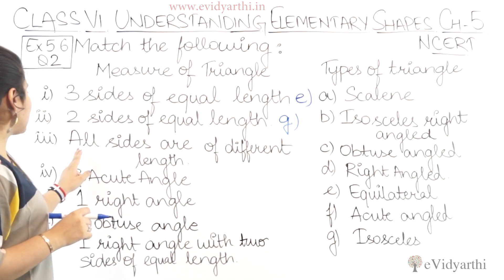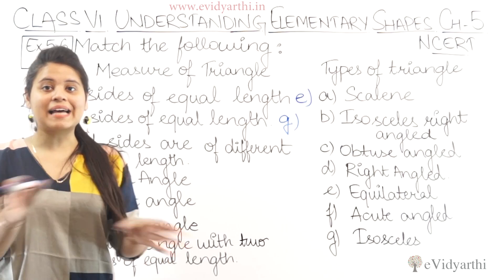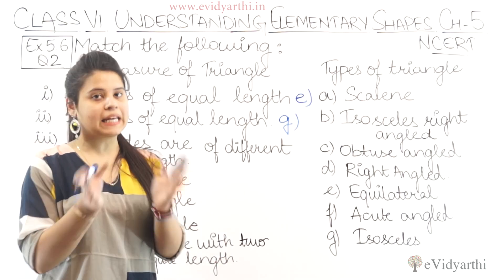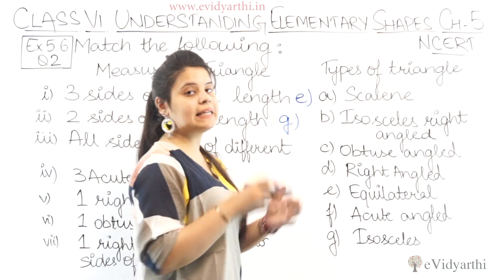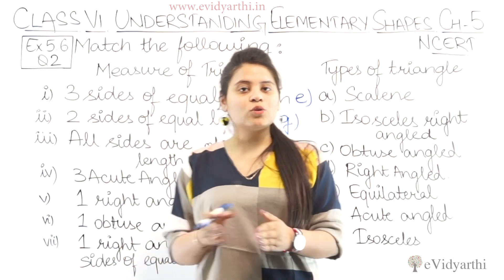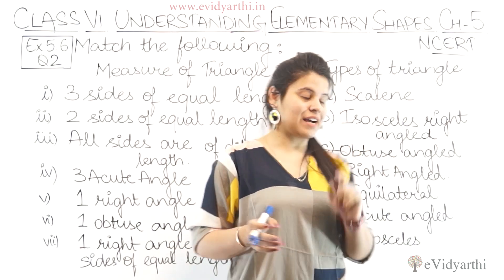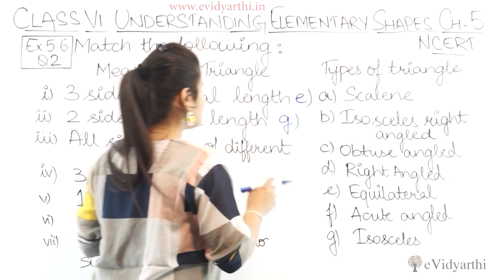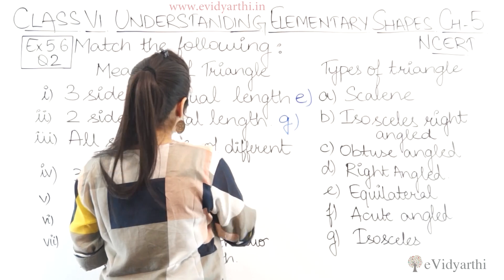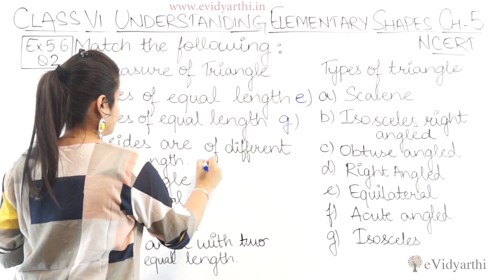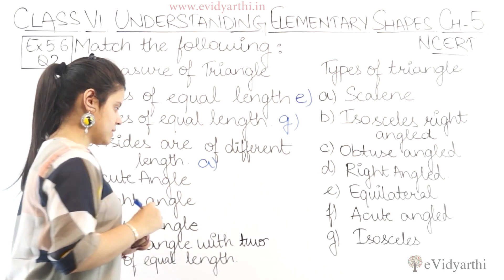Next is all sides are of different length. When all sides are of different length, that is a scalene triangle. Scalene triangle is A. So all sides of different length — this is the A part.